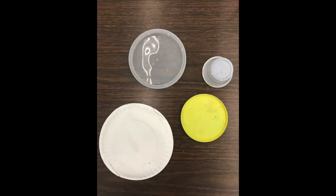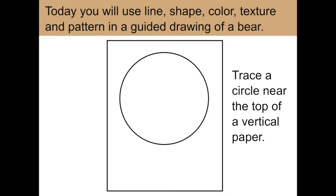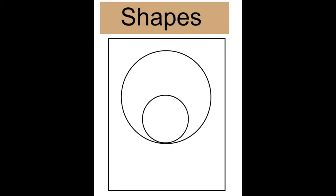Begin by looking for some circles that you can trace — different sized circles — so we can use one for the head, one for the snout, and perhaps a smaller one for the ear. Start by holding your paper the tall way and trace your largest circle at the top half of the page. Pause the video after each step so you can catch up. Now use a smaller, medium-sized circle to trace the snout. Notice it sits very low inside the biggest circle, which was the head. Pause and draw your medium-sized circle exactly where I placed mine.